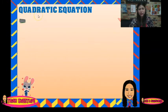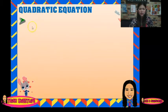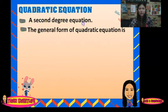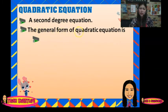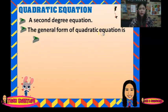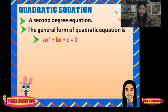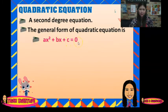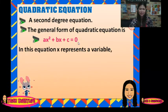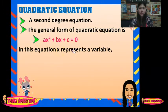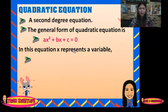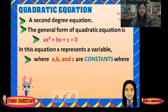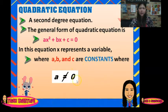What is a quadratic equation? It is a second-degree equation. The general form of a quadratic equation is Ax squared plus Bx plus C is equal to 0. In this equation, X represents a variable, where A, B, and C are constants and A is not equal to 0.